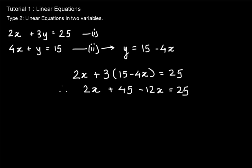Therefore minus 10x, 2x minus 12x, plus 45 equal to 25. Now the next step is to take minus 10x and 25 on other sides, so 45 minus 25 is equal to 10x. Therefore